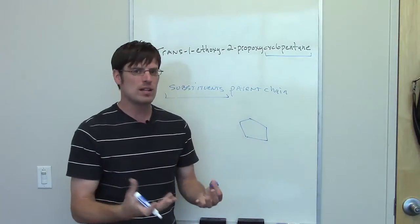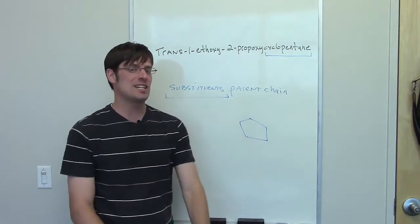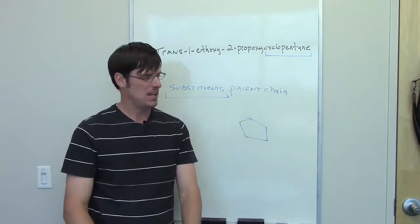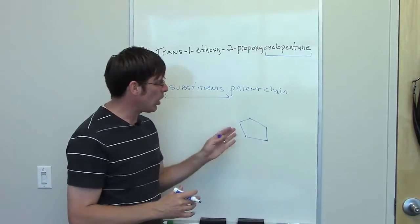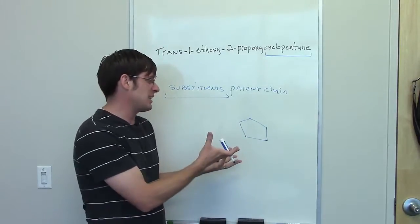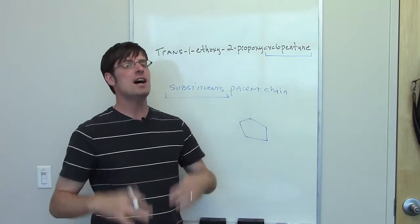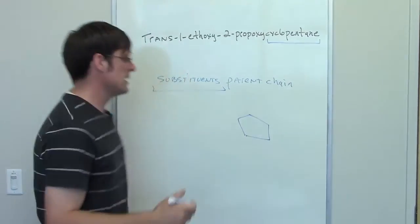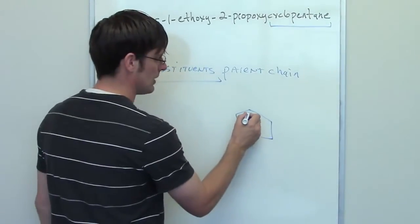Now, the next thing that we're going to do is place all the substituents in their proper locations. The way to start is to go ahead and arbitrarily number all of my atoms in the ring. Now, since I have a cyclopentane sitting there with nothing on it, it doesn't matter really where I start.